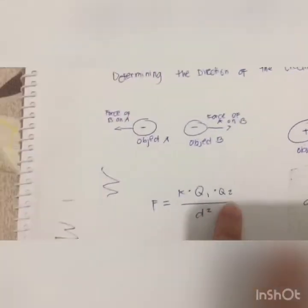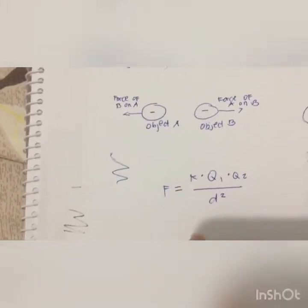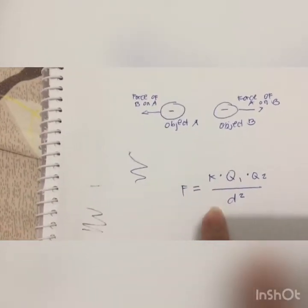I will now explain the Coulomb's Law equation. The quantitative expression for the effect of these three variables on electric force is known as Coulomb's Law. Coulomb's Law states that the electrical force between two charged objects is directly proportional to the product of the quantity of charge on the objects, and inversely proportional to the separation distance between the two objects. The equation is F = kQ1Q2/d², where Q1 represents the quantity of charge on object 1 in Coulombs, Q2 represents the quantity of charge on object 2 in Coulombs, and d represents the distance of separation in meters. The symbol k is a proportionality constant known as Coulomb's Law constant.